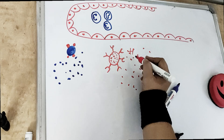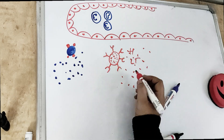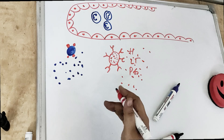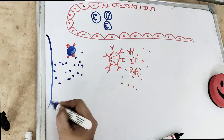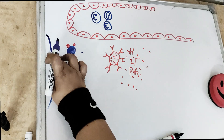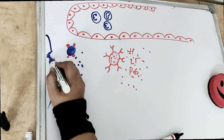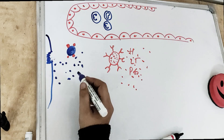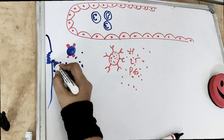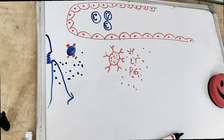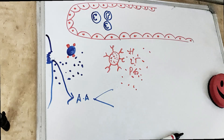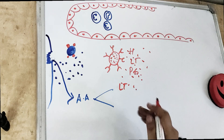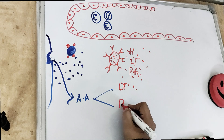These granules contain histamines, leukotrienes, prostaglandins, and bradykinin. Now these are our epithelial cells. When the bacteria comes and damages the cells, the phospholipid present in the cell membrane layer breaks down. Arachidonic acid then forms two things: leukotrienes and prostaglandins.